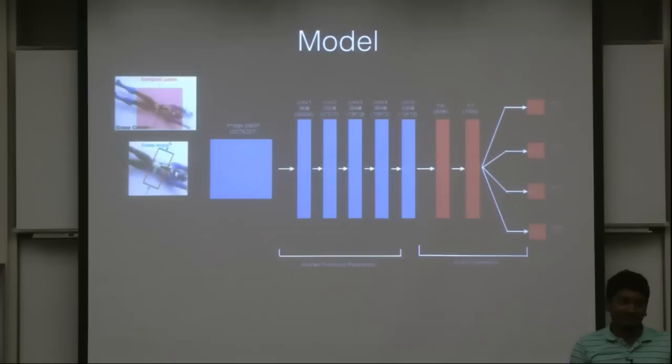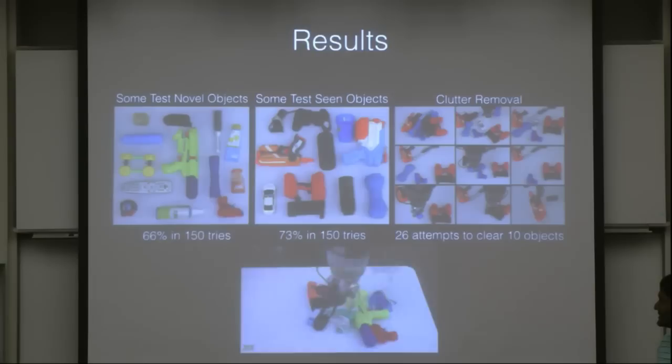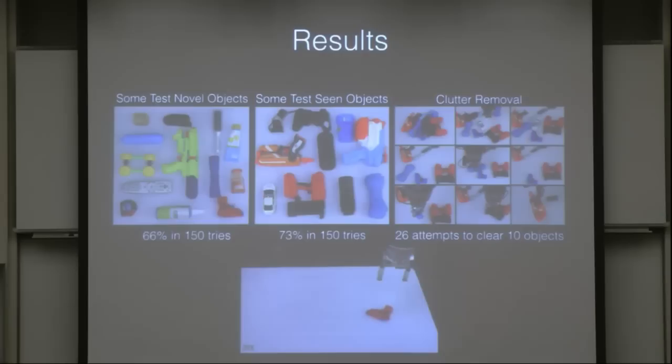Results: on grasping novel objects that are completely unseen, we get around 67% grasp success rate. If these objects have been seen before, we get around 74%. We also show trials on grasping in cluttered environments where multiple objects are placed very close to each other.